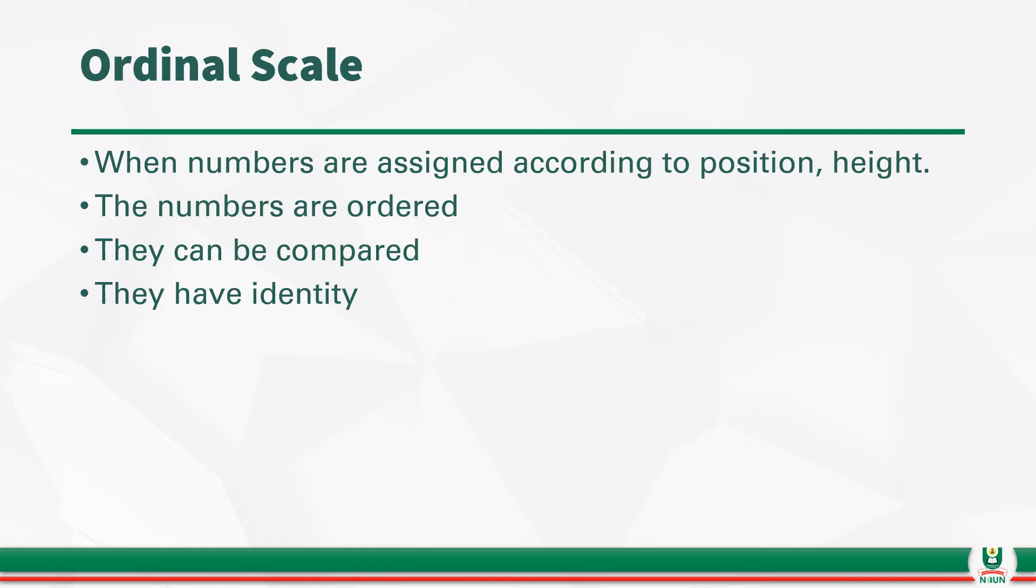Or, for example, the height of various students in the class. The numbers in this case now are ordered. If this one is taller than this one, it is seen that it is taller than that. And if the number is higher than that, it will be seen that it is higher. And these numbers can be compared, like what we are saying here. That one student is taller than the other. Or one number is higher than the other. Such scale of measurement is called the Ordinal Scale.